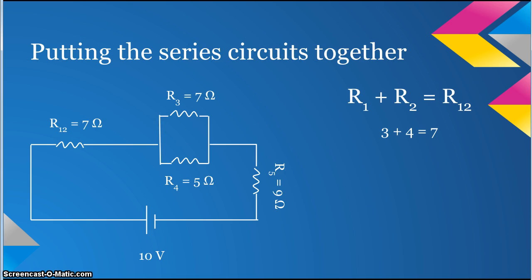To combine the two, you just add the two resistors. So R1 plus R2 equals 3 plus 4, which equals 7.